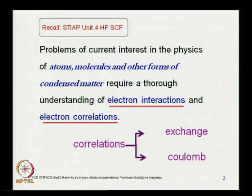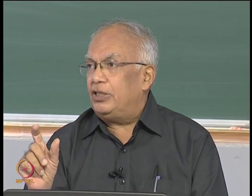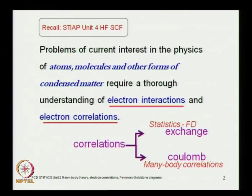Coulomb correlations and Coulomb interactions are two different things. Coulomb interaction is the usual 1/r₁₂; Coulomb correlations is what many-body theory is about — that is the focus of unit 2. The exchange correlations come from statistics, because electrons are Fermi-Dirac particles and must observe Fermi-Dirac statistics, which requires that a many-electron wave function must be anti-symmetric. There is a certain correlation coming from statistics. In addition, there is the Coulomb correlation, which is not included in the Hartree-Fock formalism, and that results from many-body or many-electron correlations.